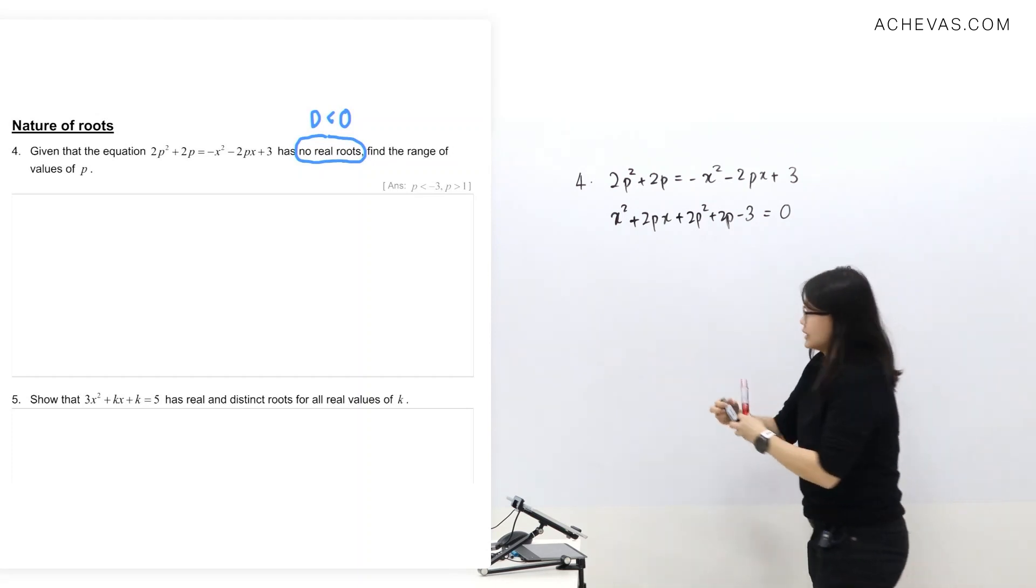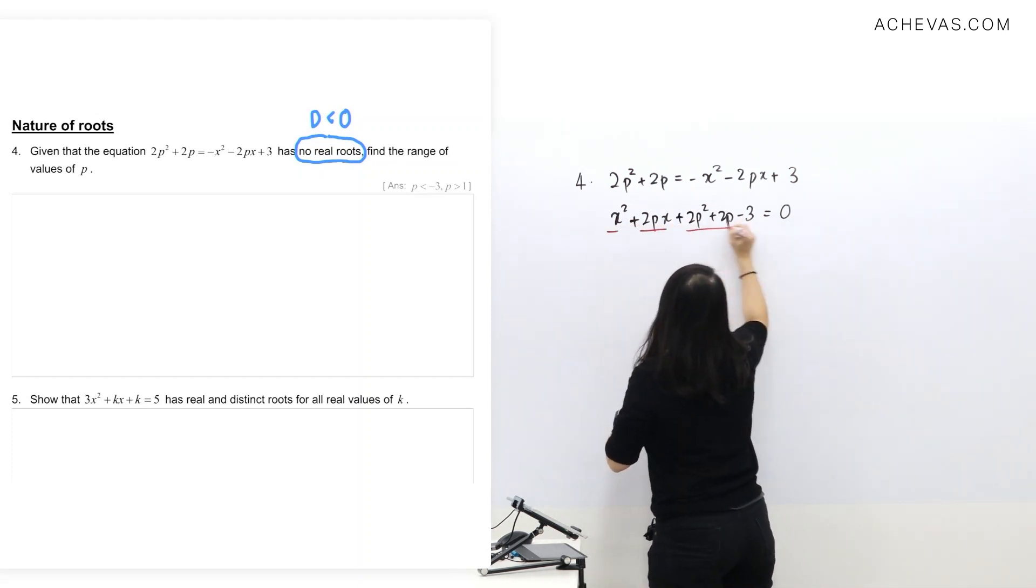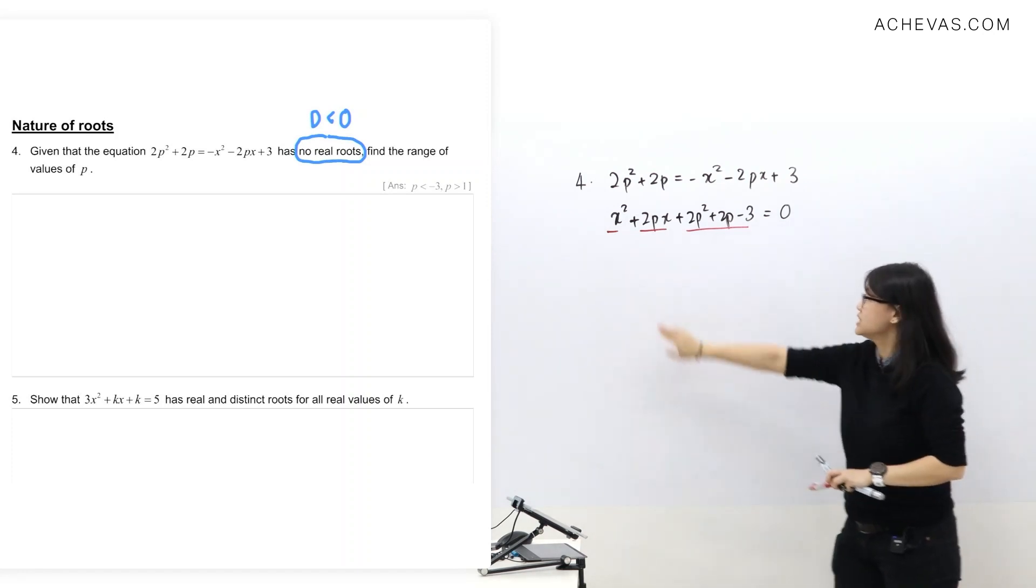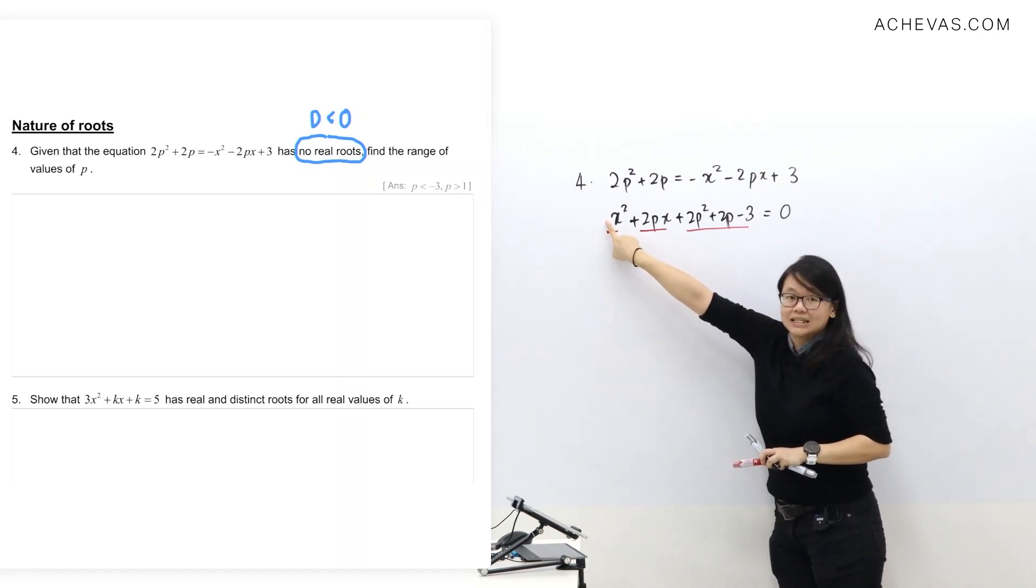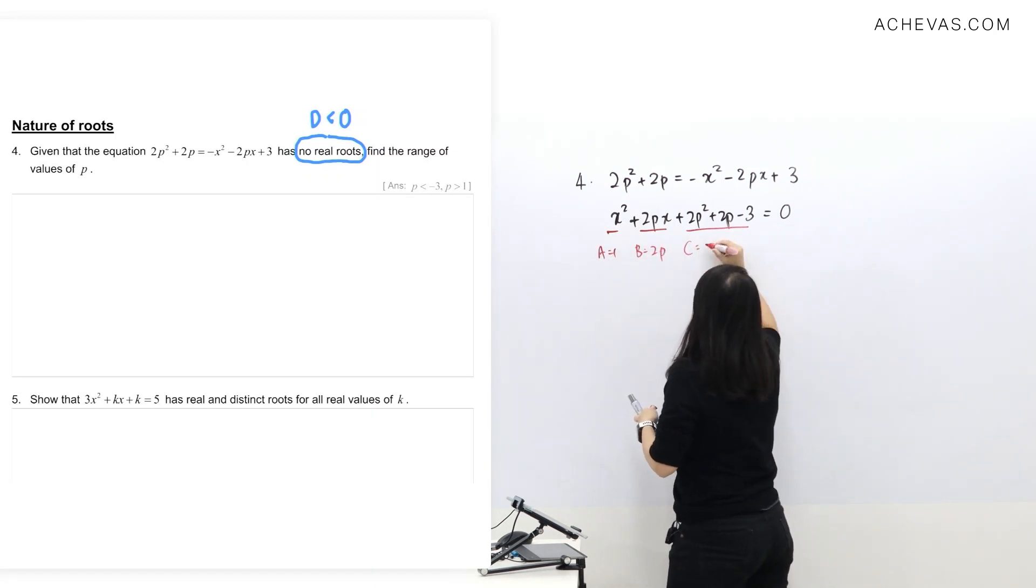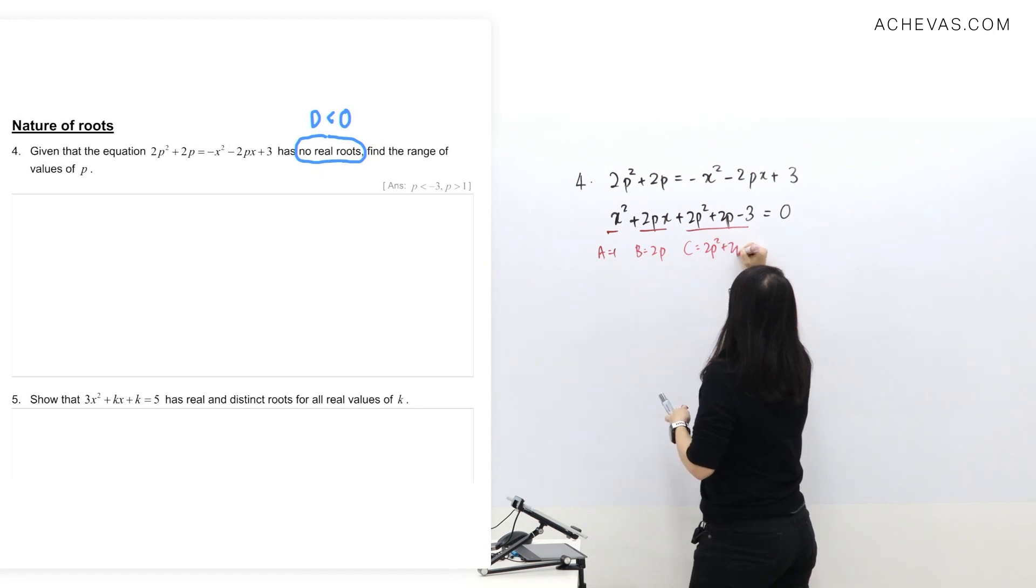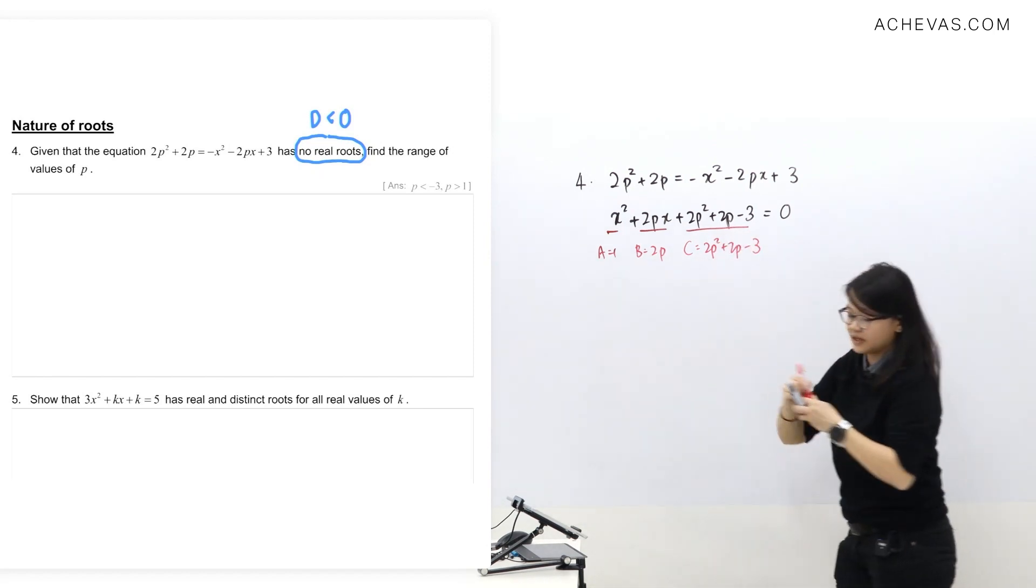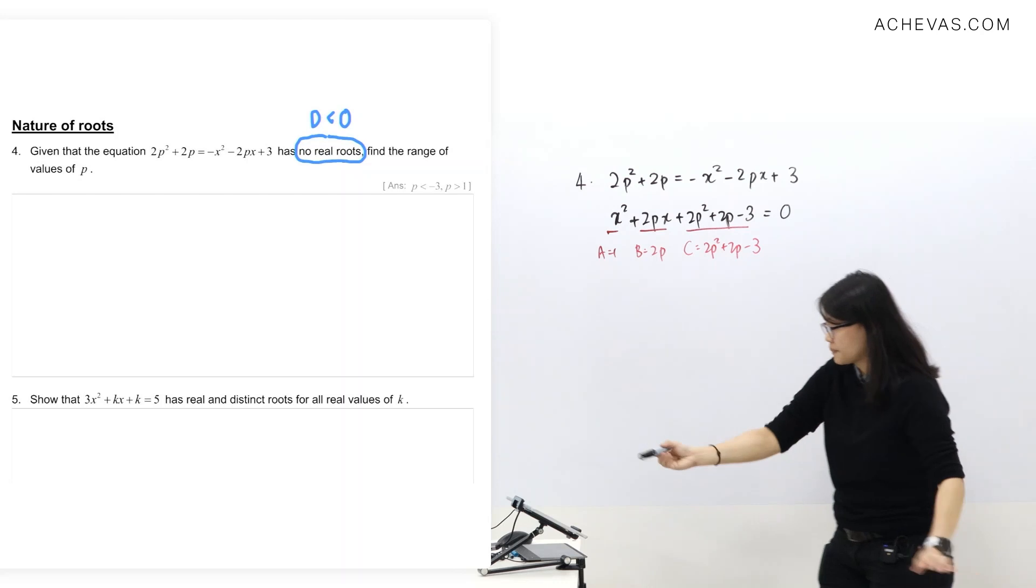Let me just underline. I like to arrange in this way. Then you can see in front here nothing means a is one. If you need to write that you write that. b is 2p. c is 2p² + 2p - 3. Since the question says no real roots, we're going to do discriminant less than zero.